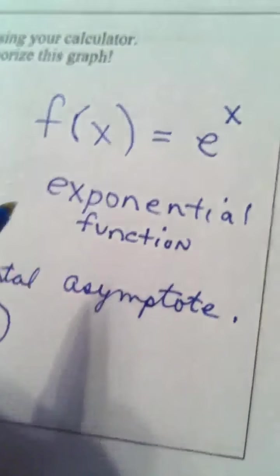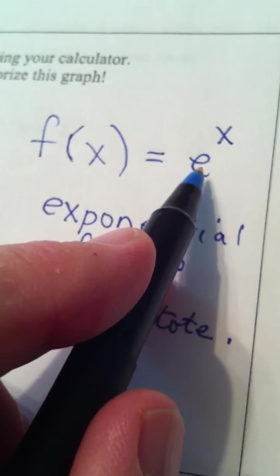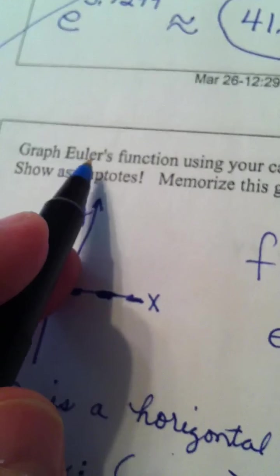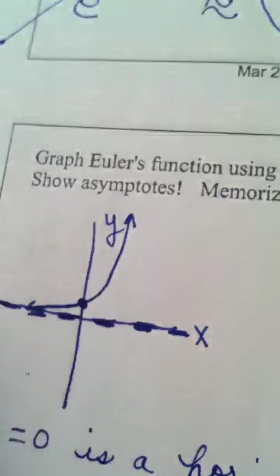And in this particular case, this specific exponential function is called Euler's function because we used base e.